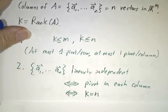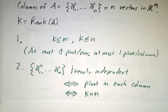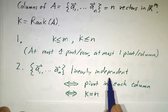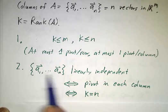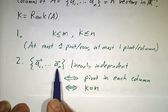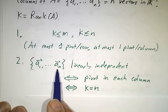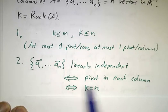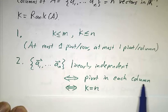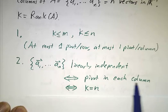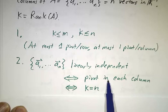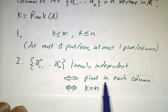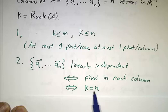The next thing to note is when are a bunch of vectors linearly independent? They're linearly independent if the only solution to Ax = 0 is x = 0. But that means there are no free variables, so everything is a pivot variable, so you have a pivot in each column. They're linearly independent if and only if you have a pivot in each column, which is if and only if the rank equals n.